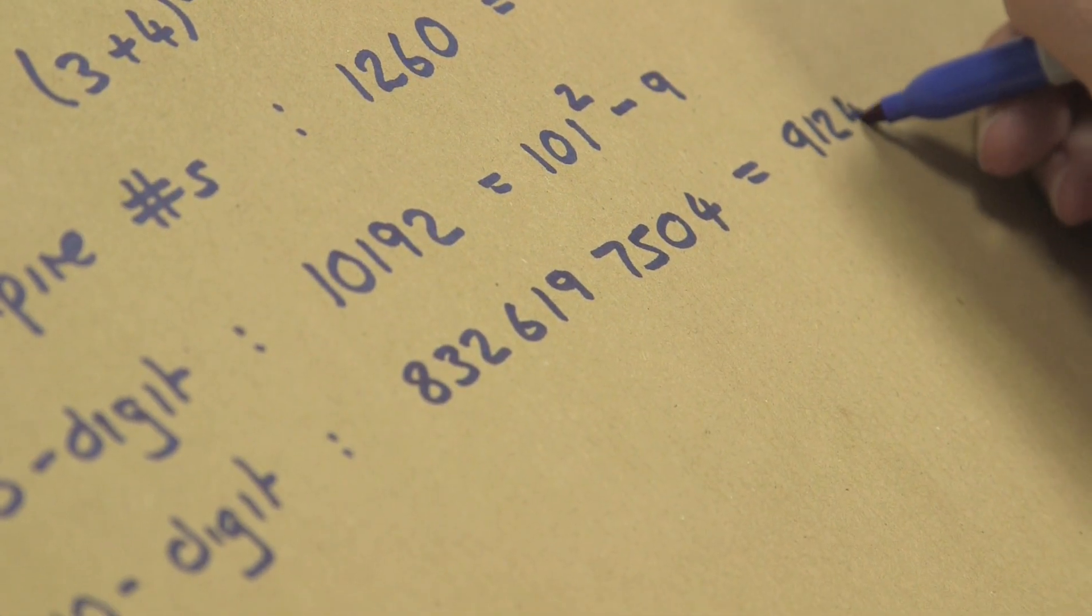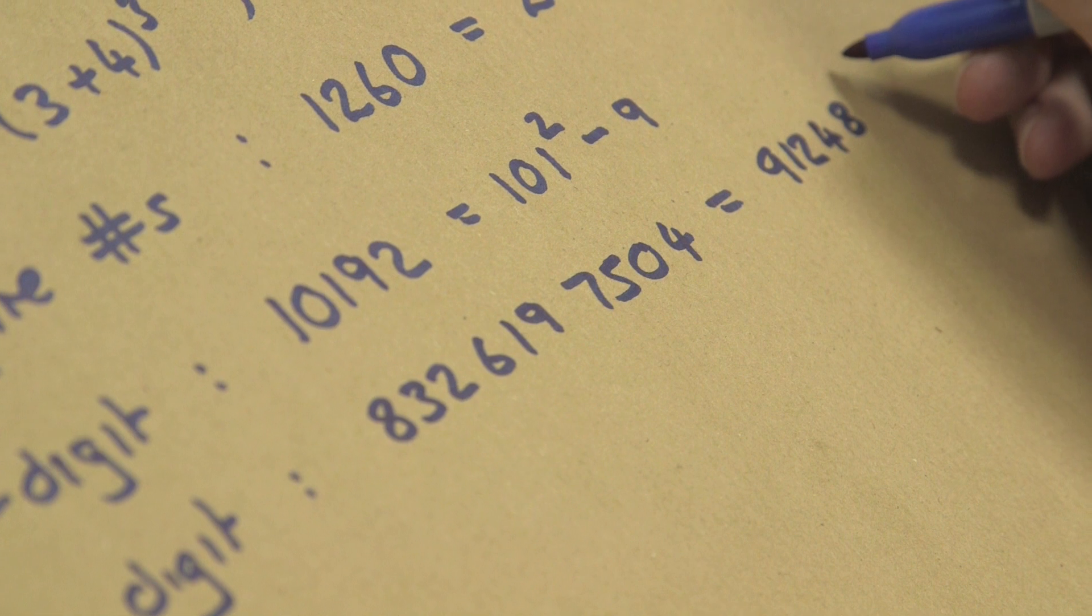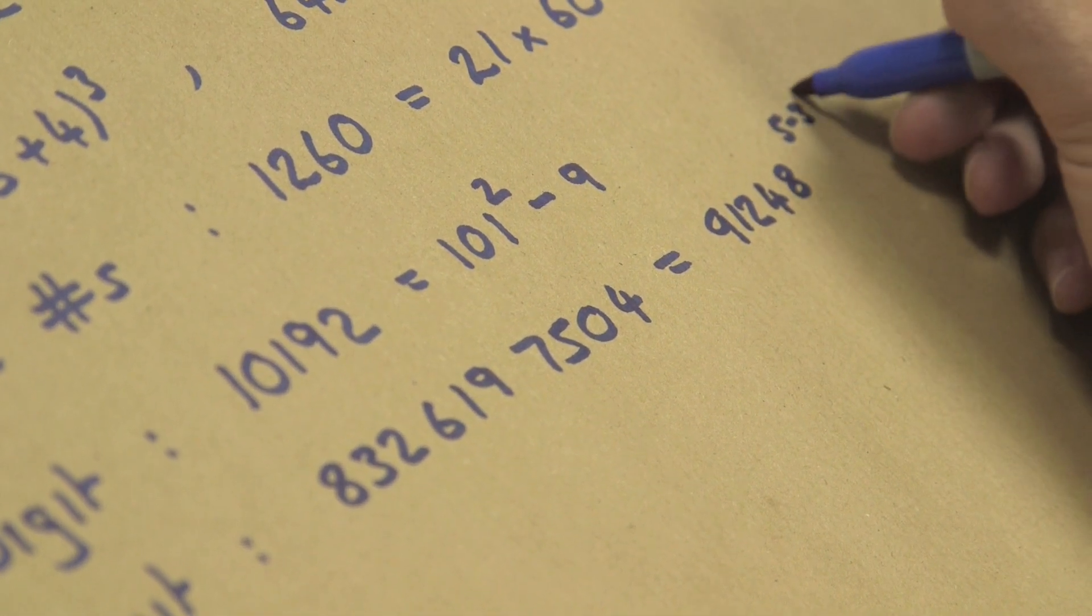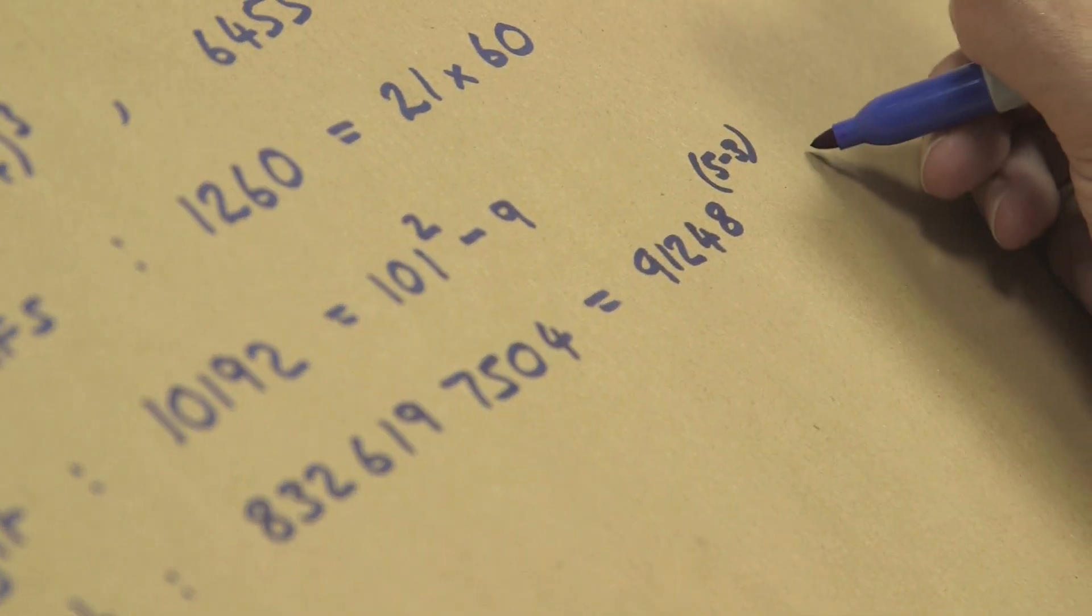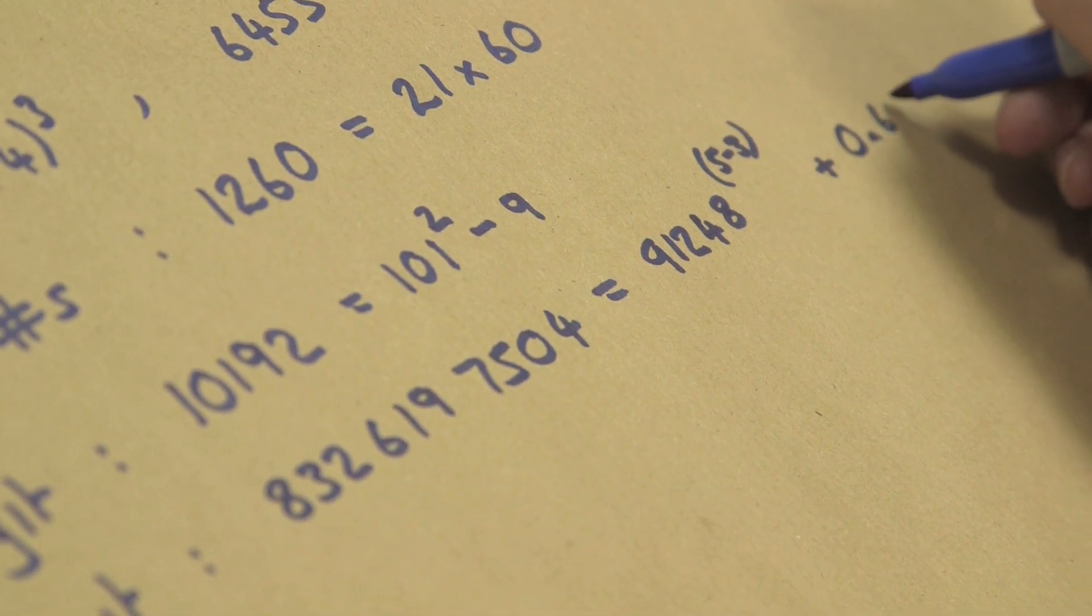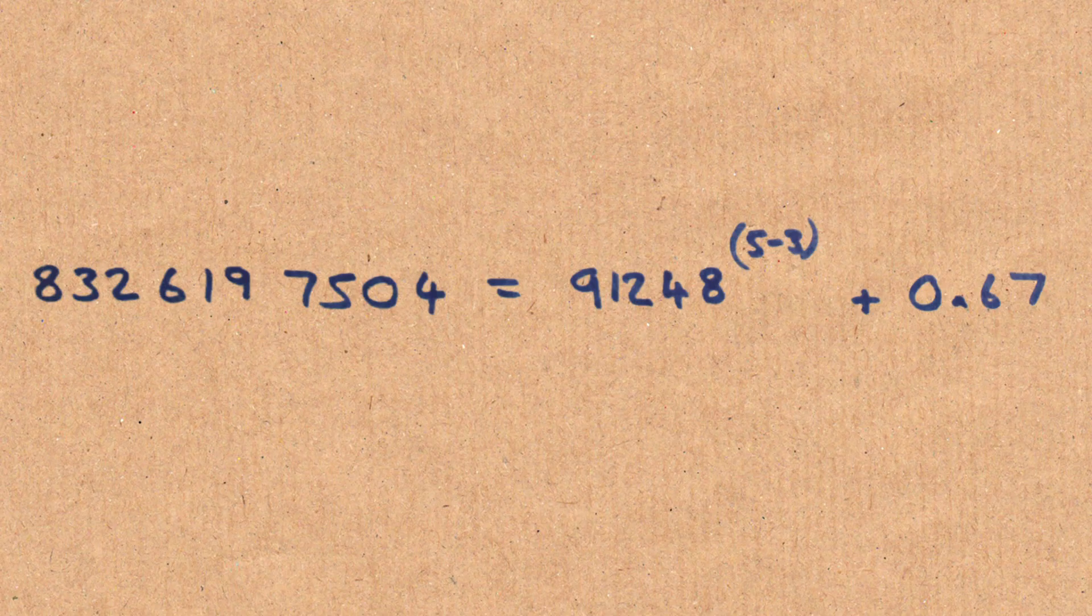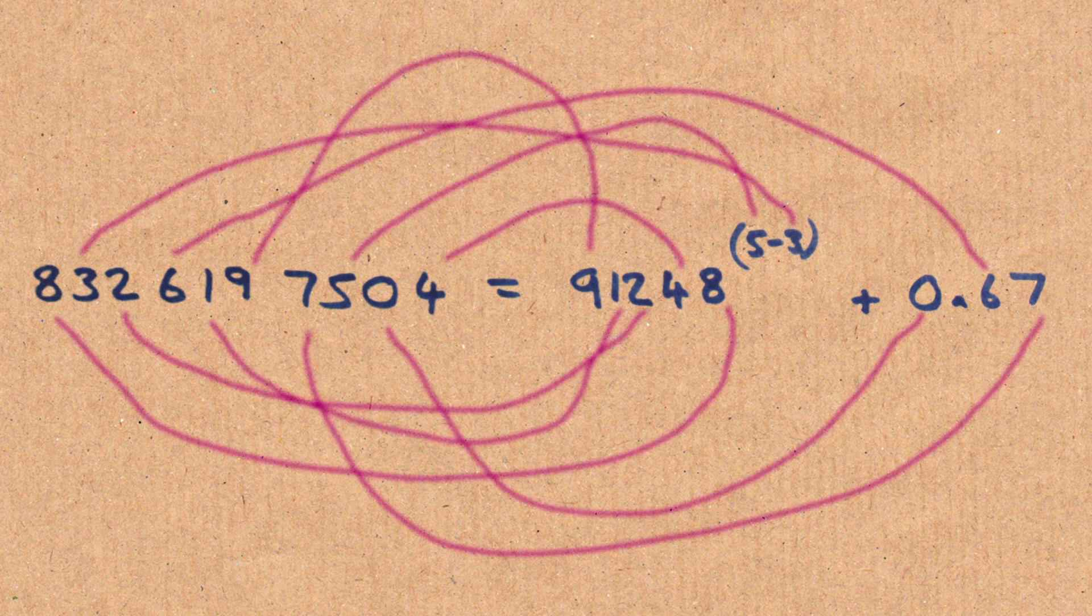what's that equal to? 91248 to the power of 5 minus 3, plus 0 times 67. Is the 0 times 67 together? Have they just used the 0 there to cheat away?